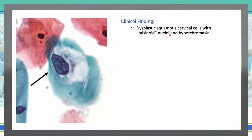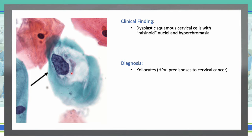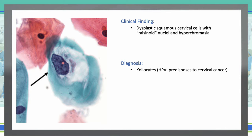Next, dysplastic squamous cervical cancer with koilocytes — raisinoid-like nuclei and hyperchromasia. These are squamous cells productively infected with human papillomavirus. An important hallmark is irregular peripheral collapse of the keratins, leaving clear space around the nucleus. This collapse is induced by the E4 gene of HPV, decreasing the strength of the epithelium and allowing the virus to shed. HPV also induces unscheduled DNA synthesis. We see koilocytes in cervical cancer.